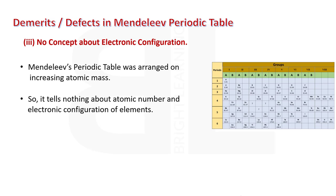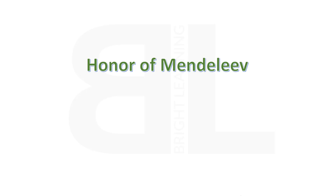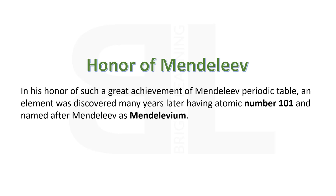In spite of the demerits or defects in his periodic table, Mendeleev's contribution to the classification of elements is greatly admired and appreciated, although his periodic table was later discarded. In his honor, an element discovered many years later was named Mendeleevium, with atomic number 101 and symbol Md.